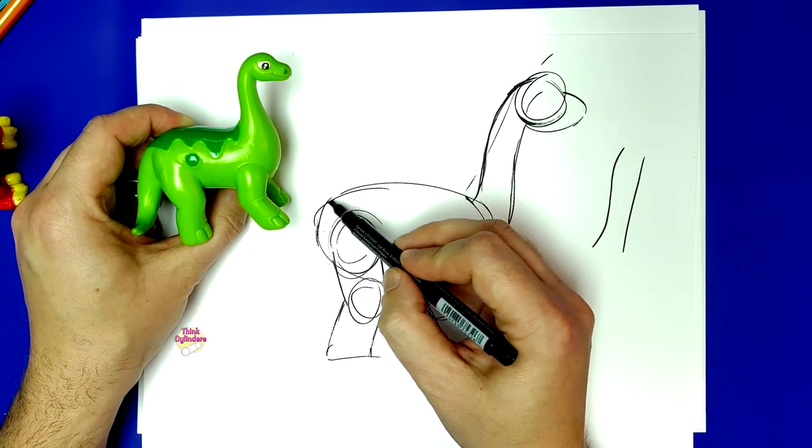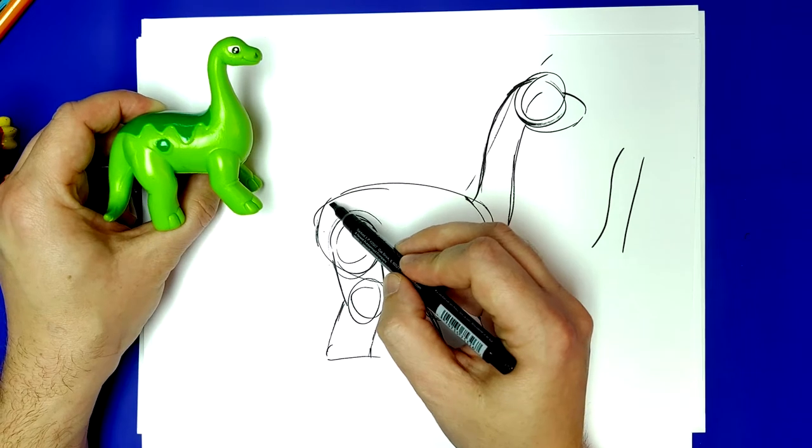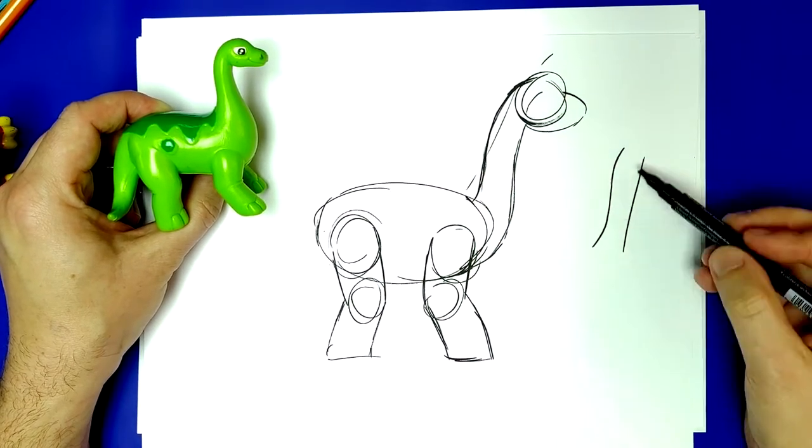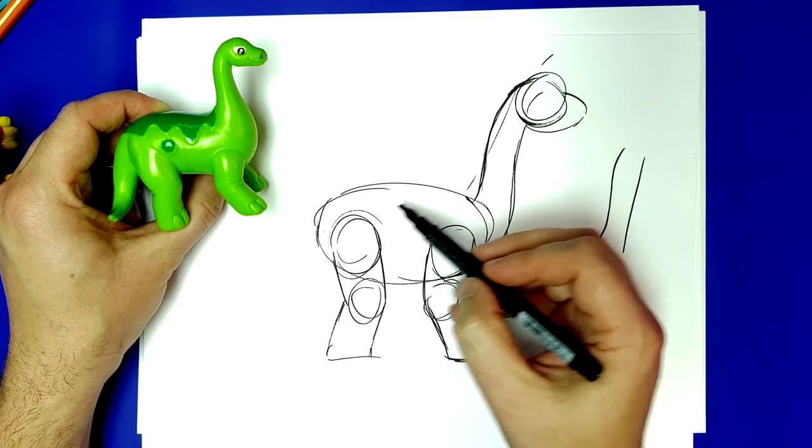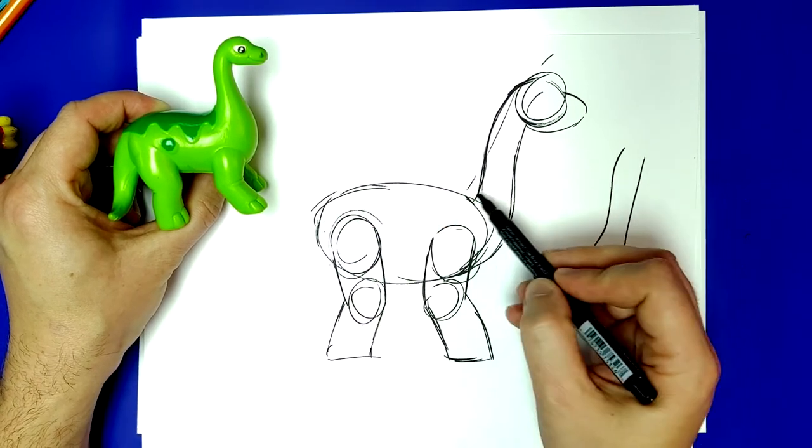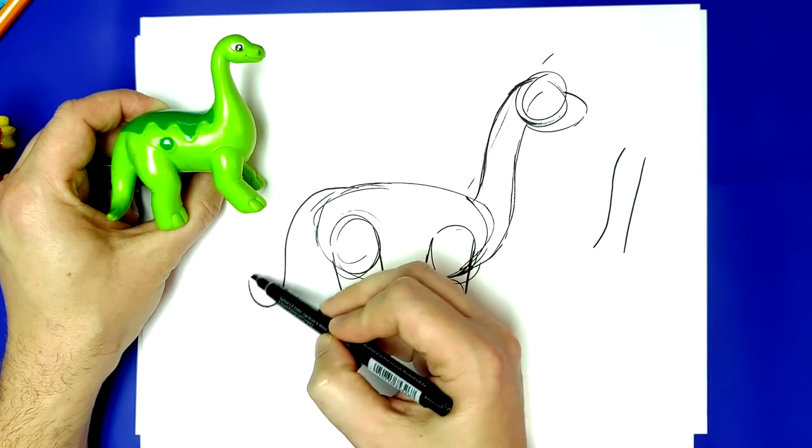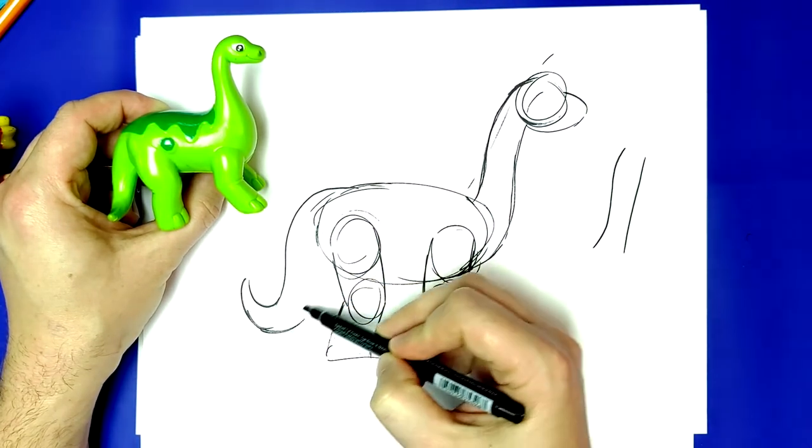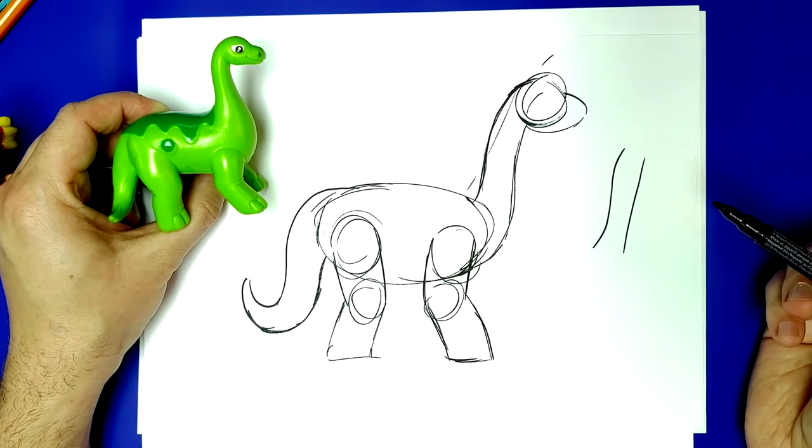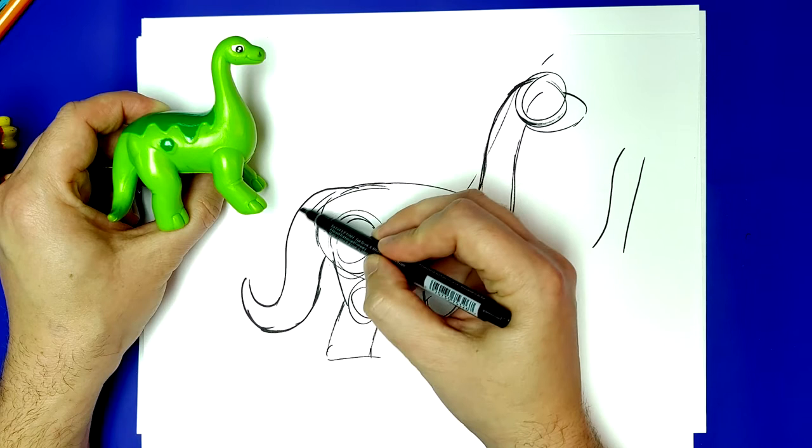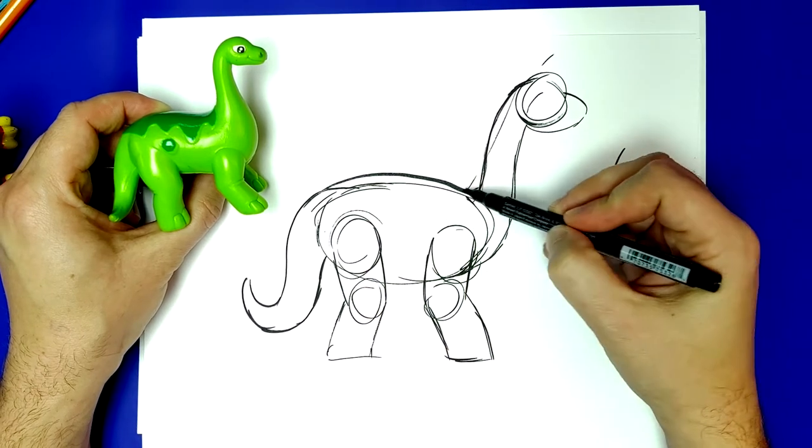Now we're going to work on his tail. His tail is just kind of a fun shape. Remember, you've got to get used to drawing some of these curved and straight lines. I'm going to come right off of this line, right off his back, and drop his tail down and curl up. Alright. So now I'm going to follow this line and continue it all the way to his neck and all the way up.